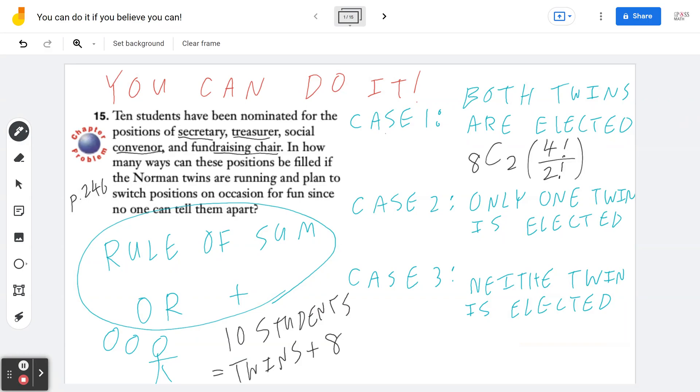Now, if only one of them is elected, this means the other one is not elected. Case two means one of them is elected, the other one is not. This implies that out of the remaining eight students, we still need to choose three more. Again, four students, because there's only one twin in these four, it's going to be four factorial. You do not have to worry about the identical objects.